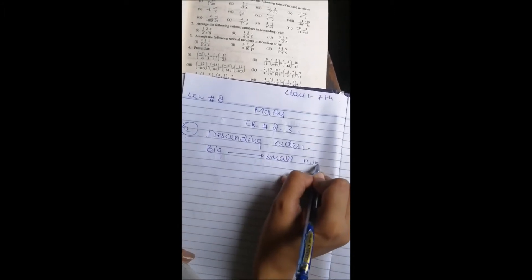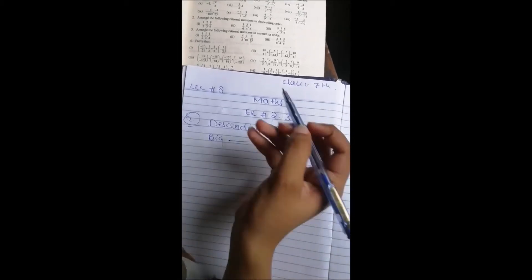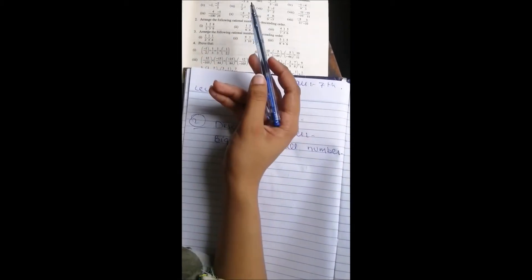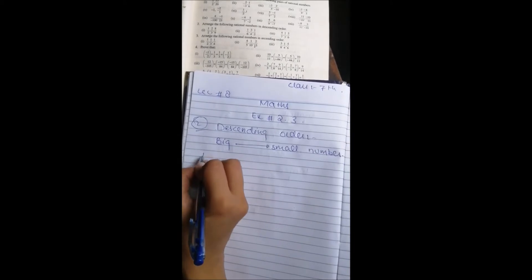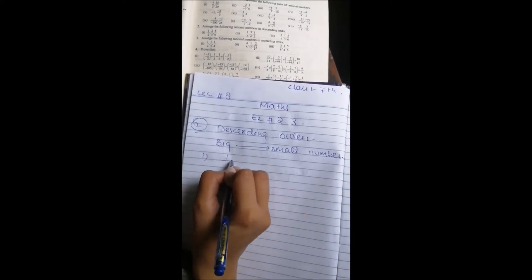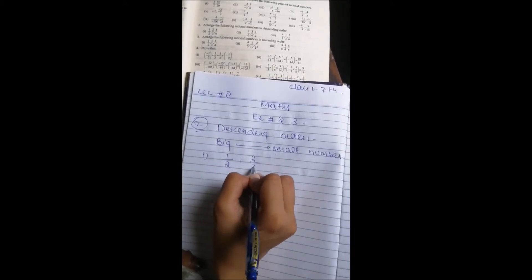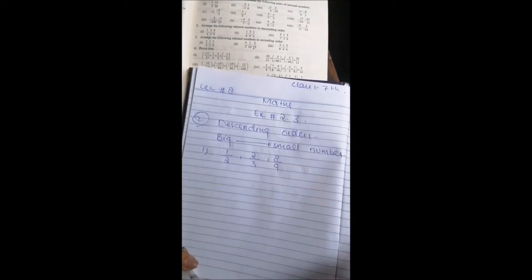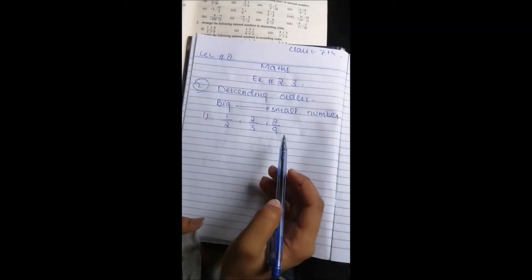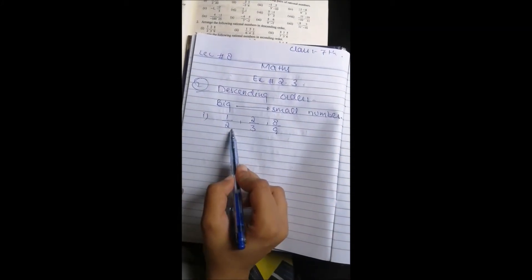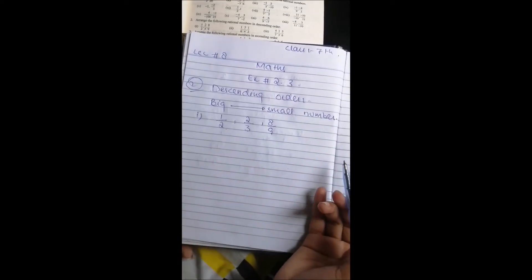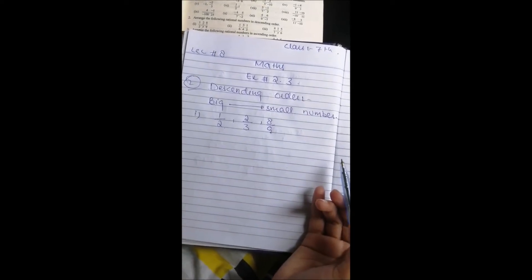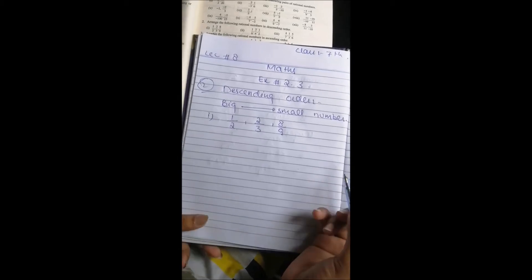First, you will write the numbers. Now question number 1: 1 by 2, 2 by 3, 8 by 9. Now you have to know that you have different fractions. You can't solve it this way. You can't tell directly which one is bigger and which one is small. So you need to do the denominator.